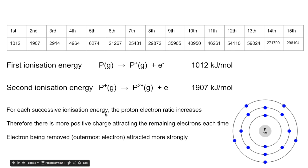So to explain that very simply: for each successive ionization energy, the proton to electron ratio increases. Therefore there's more positive charge attracting the remaining electrons each time. The electron being removed, the outermost electron, is attracted more strongly.